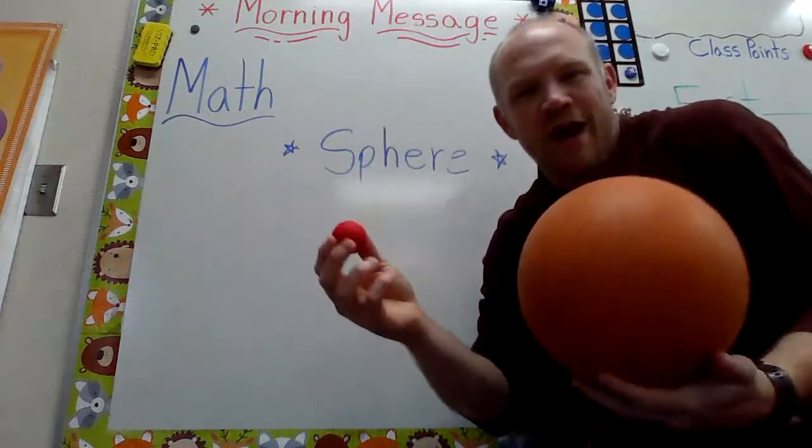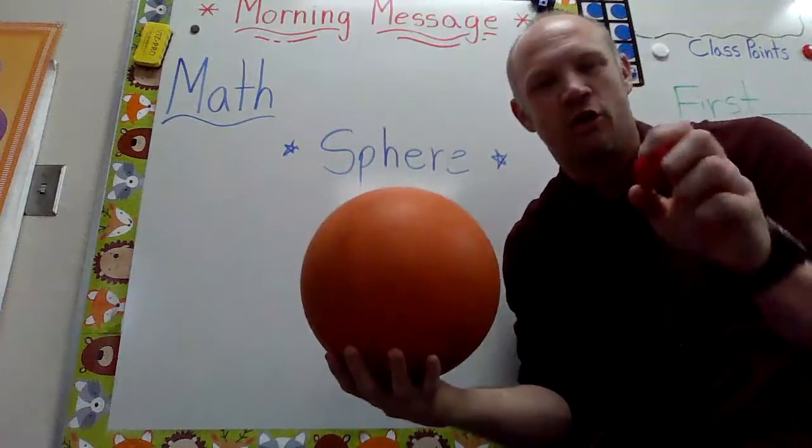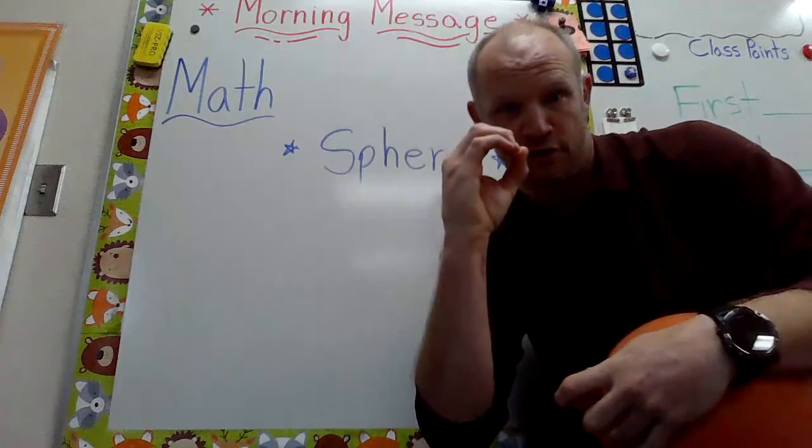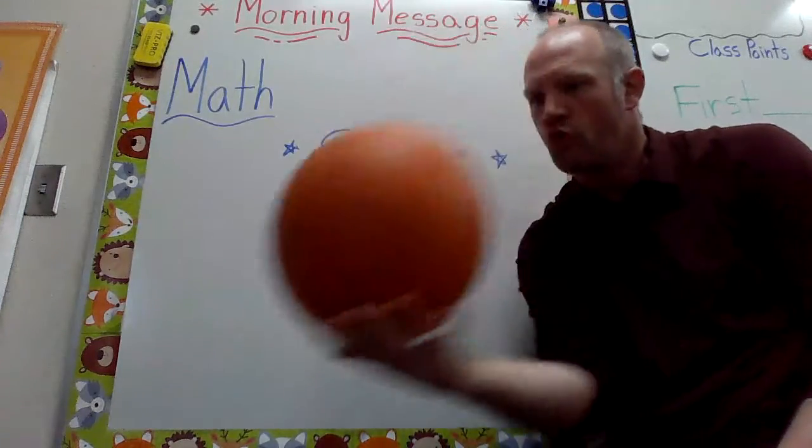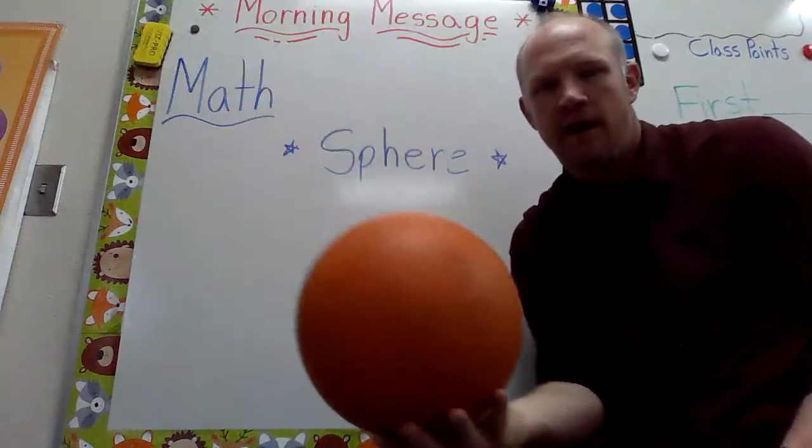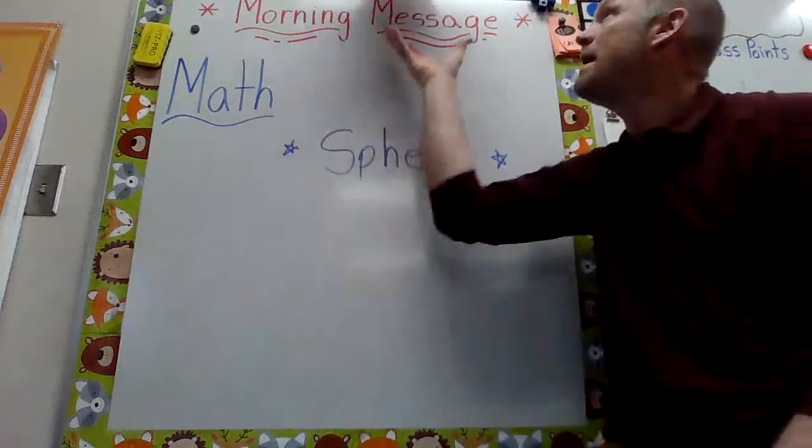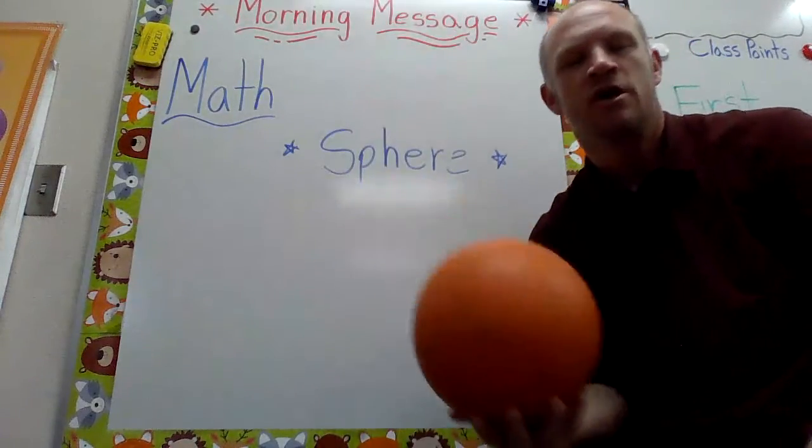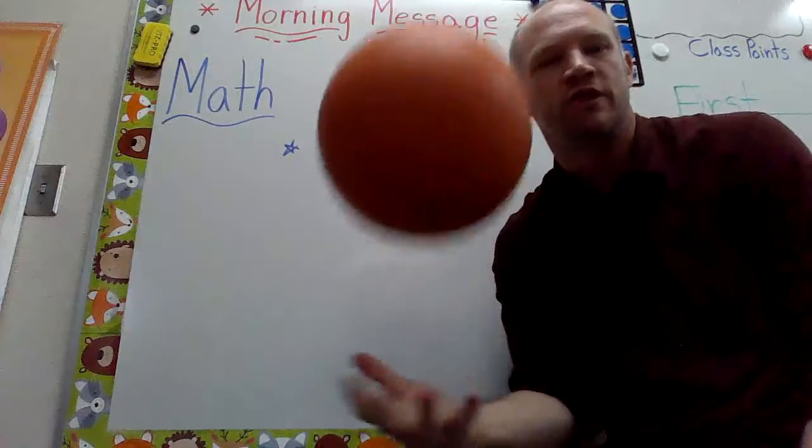So different ways to describe a cool sphere guys. A sphere has zero faces. A sphere rolls, and it might even bounce. So I want you guys to do this for Mr. Reilly if you could.